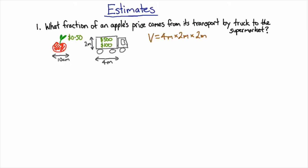So that's my volume of a truck: four times two times two is 16 cubic meters. My volume of an apple is a thousand cubic centimeters.